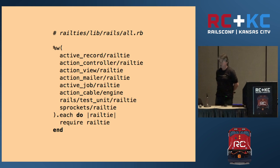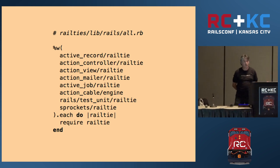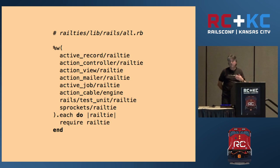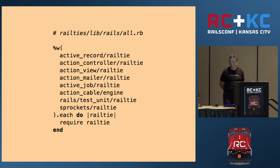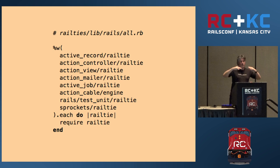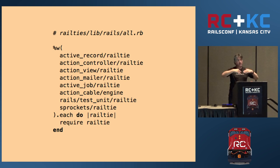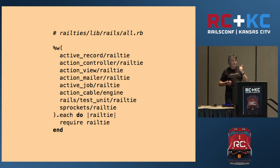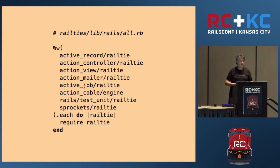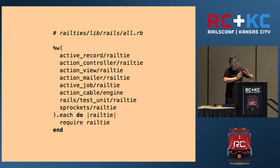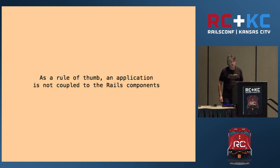So that's what rails/all does. It just loads all the railties of the different Rails components. Rails/all simply loops and loads everything. As a side effect of loading these things, Rails knows that a railtie has been subclassed, so it can list the loaded railties. Also as a side effect, we have the configuration points and the declarations of the initializers set up — like a setup phase.